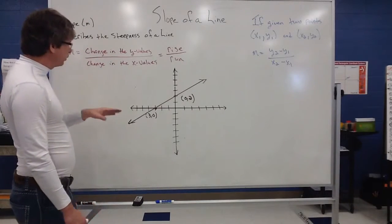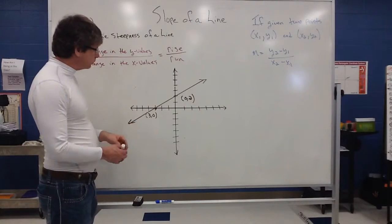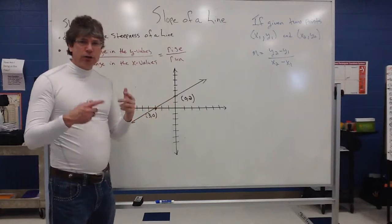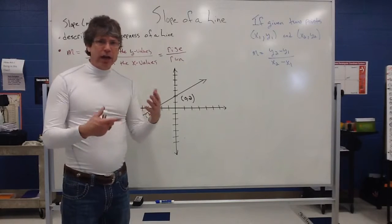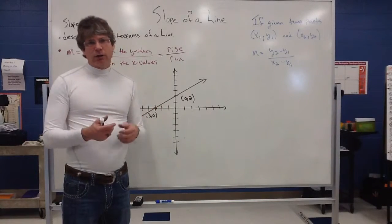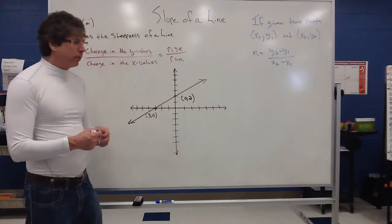So, if I want to determine the slope of this line, what you have to identify are two points that are on the line. And that change in those y values and that change in those x values is describing what we call the slope of the line.